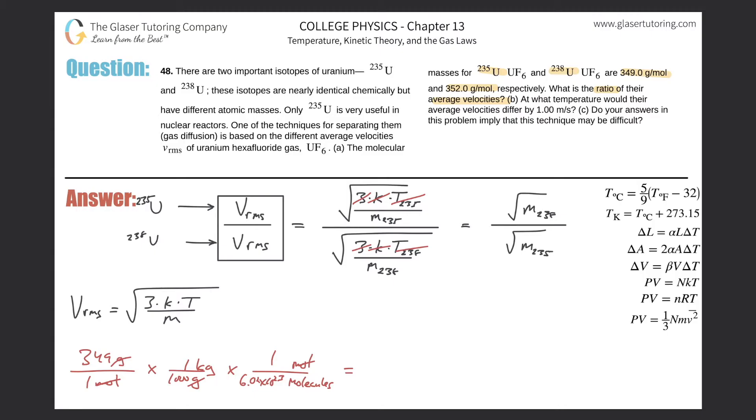So 349 divided by 1000 times 6.02 times 10 to the 23rd, and here we have 5.79, about 5.80 times 10 to the negative 25th kilograms per molecule. This is for U-235. So this value would go in here. And then you'd have to do the same thing now for 238.